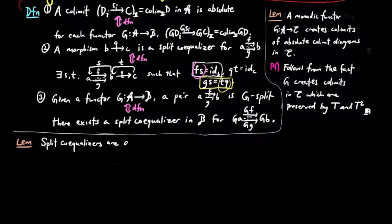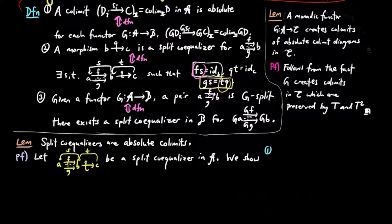Next, we show that split co-equalizers are absolute colimits. So let the following diagram be a split co-equalizer in A. We need to show one, that Q is a co-equalizer of FG, since to be an absolute colimit you must first be a colimit, and two, that each functor G preserves this co-equalizer.